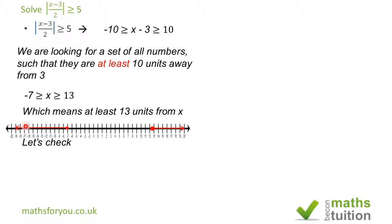What about here? Let's pick the number, say, minus 13. Minus 13 minus 3 will give us minus 16. Divide minus 16 by 2, we have minus 8. And because we deal with absolute values, minus 8 becomes 8, and 8 is greater than 5. So all the numbers to the left of minus 7, including minus 7 itself, are valid.